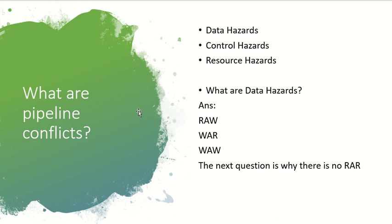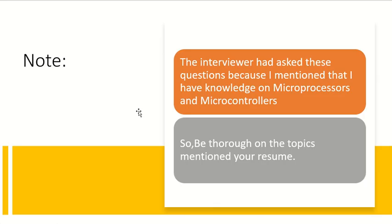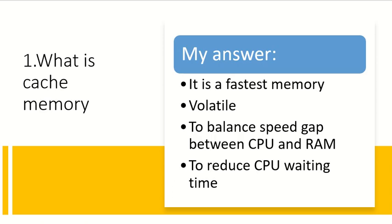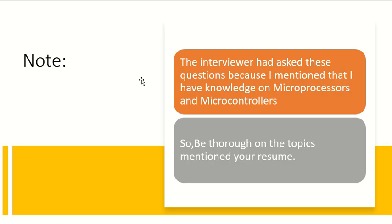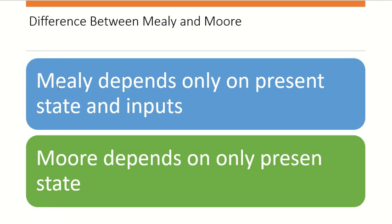He was impressed with my answers. An important note: the interviewer asked those three questions — cache memory, pipelining, and pipeline conflicts — because I had mentioned in my resume that I have knowledge of microprocessors and microcontrollers. So be thorough on the topics you have mentioned in your resume. If you have mentioned computer architecture and organization, go through the basics, because there is a chance the interviewer will ask questions on those topics.